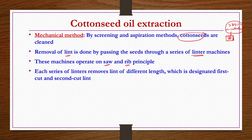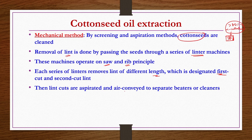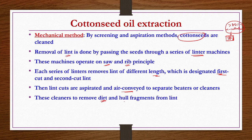Each series of linters removes different lengths of lints — designated as first cut and second cut lints. The lint cuts are aspirated and air-conveyed because they are very light. Cleaners remove dirt and hull fragments from the lint. After this step, a clean lint rich in alpha cellulose is obtained for other applications.